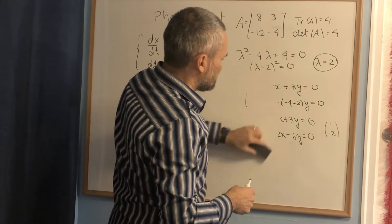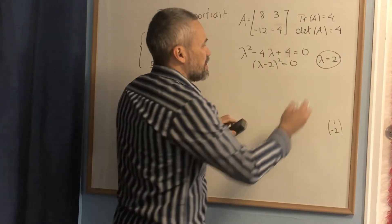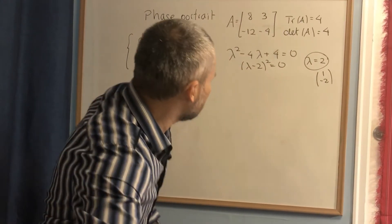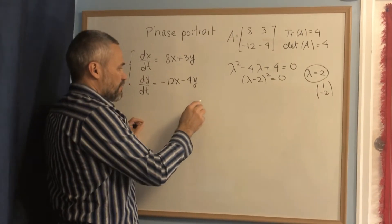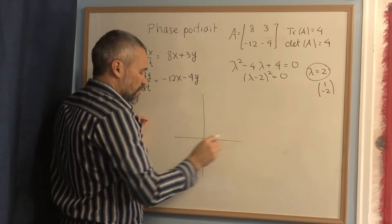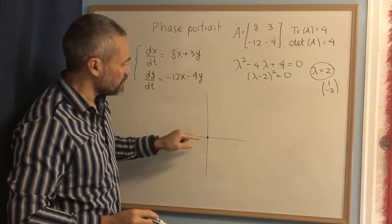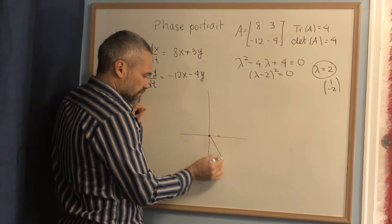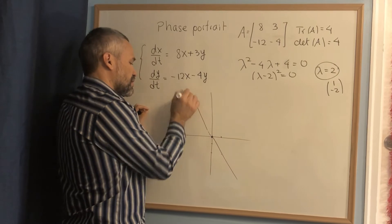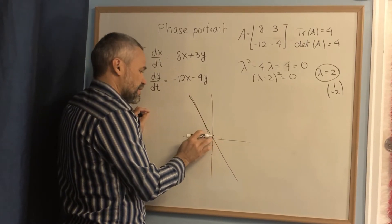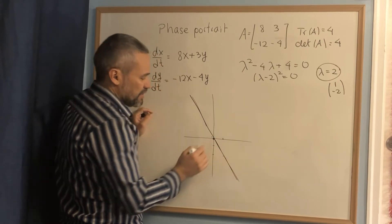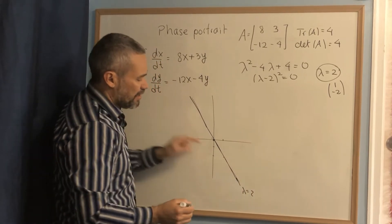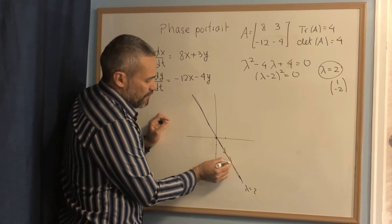Let me erase all of this. This is the eigenvector: 1, negative 2. Let me draw it here. That means in the phase portrait, let's do the Cartesian axis. We know that this is an orbit on its own. We have this line, 1 negative 2. This line is supposed to be seen as two semi-lines. We write here lambda equals 2. That means the arrows on that line go away from the origin.